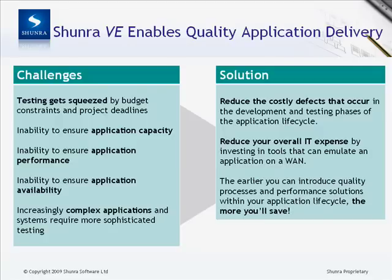There are many challenges today with application performance testing. Testing time and resources tend to get squeezed by deadlines or budget constraints. Another challenge is the inability to ensure application capacity. Once applications are deployed, latency and other network effects delay information exchanges over the network. There are challenges with application performance and availability, making it important to test applications in real-world scenarios. Increasingly complex applications also require sophisticated testing, which may not adequately be addressed in your budget or project schedules.